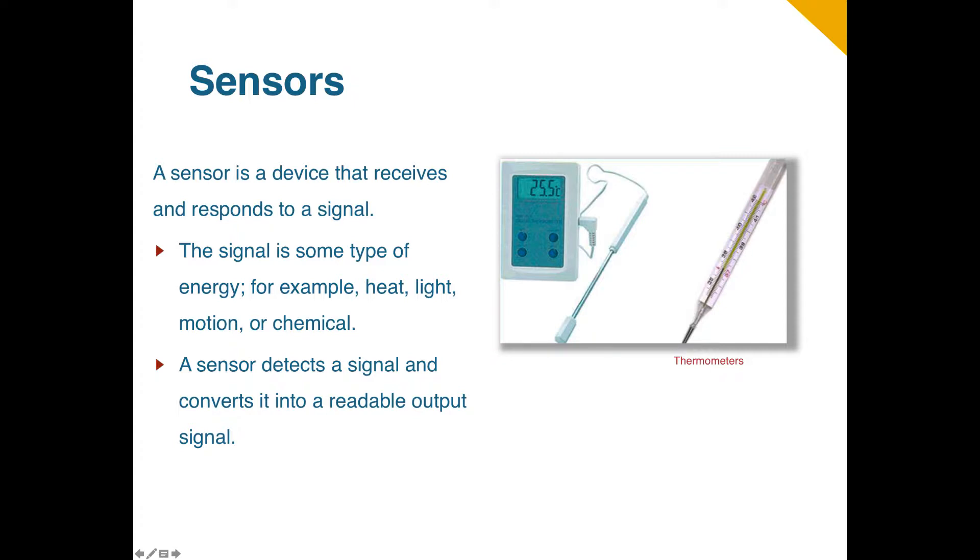Once a sensor detects one or more of these signals, it converts it into a readable output. The output could be a readable scale, such as the scale on a mercury thermometer, or an analog or digital readout.